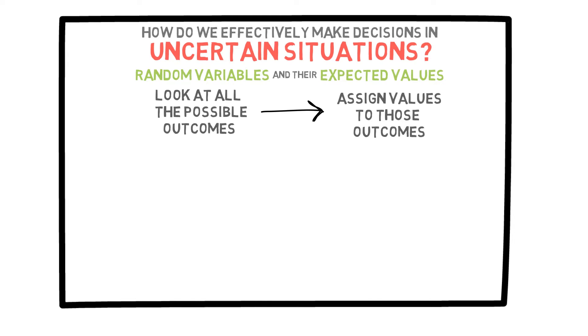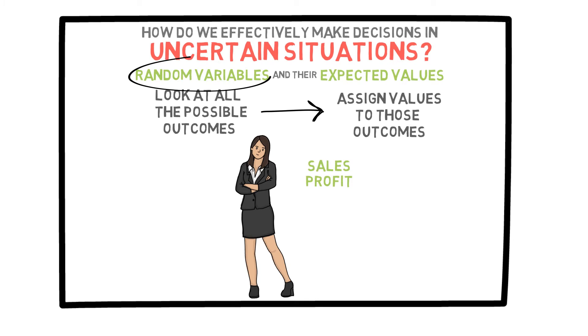For example, let's say you want to start a business. There are many aspects of this random experiment you would be interested in. For instance, you'd like to know your sales and your profit at the end of your first year. Because we don't yet know what these values will be, we can treat them as random numbers, or as we call them in probability theory, random variables.